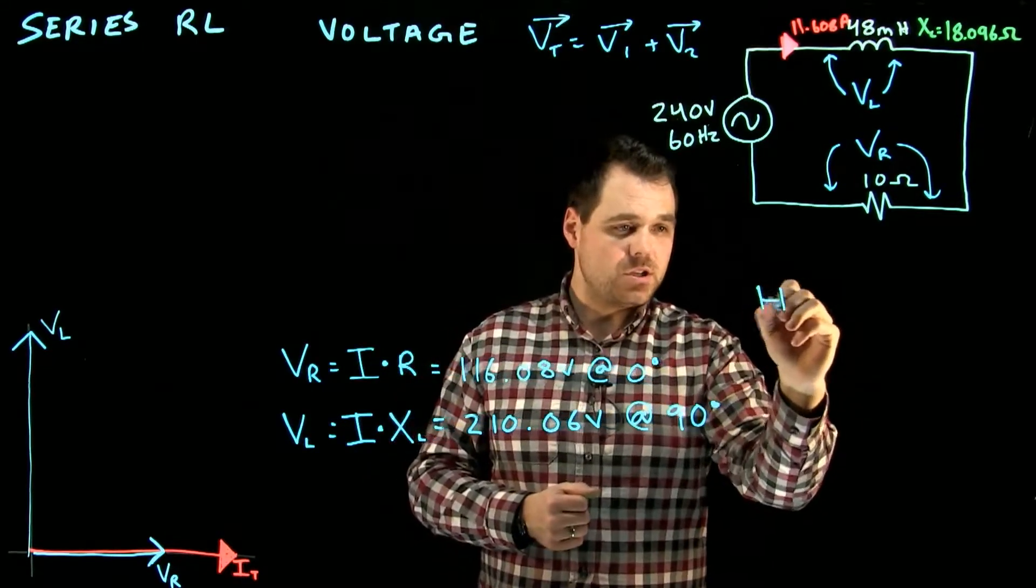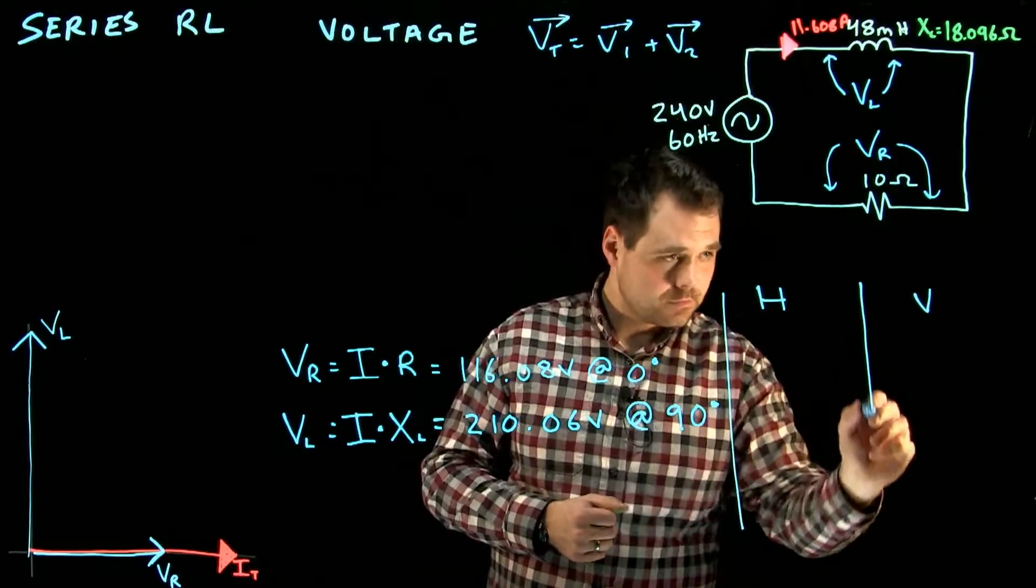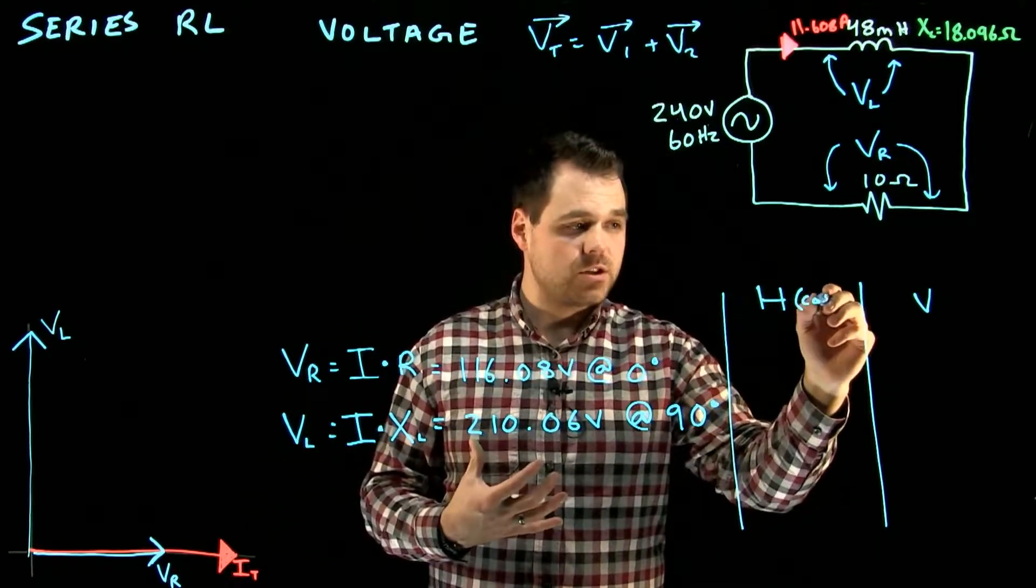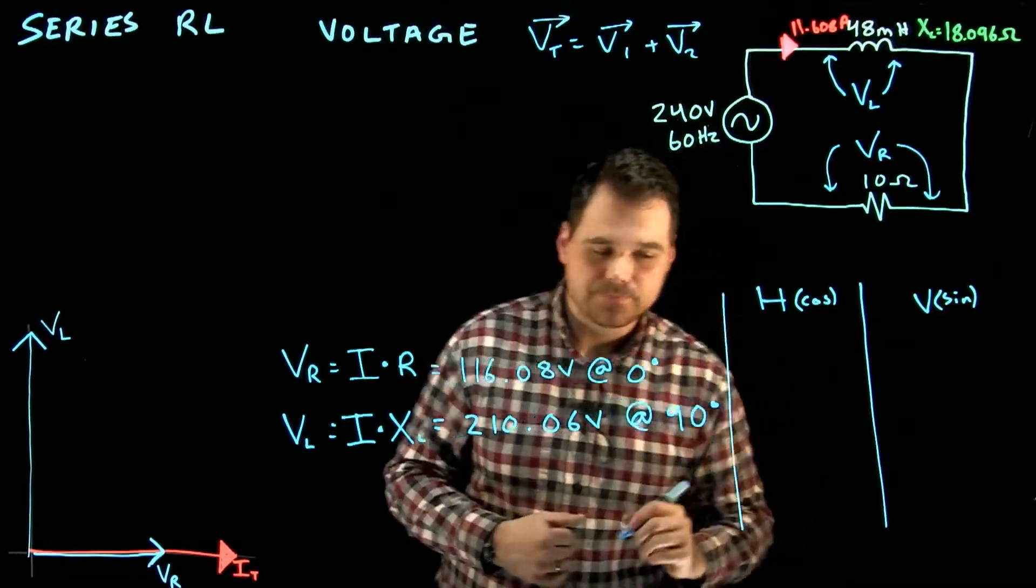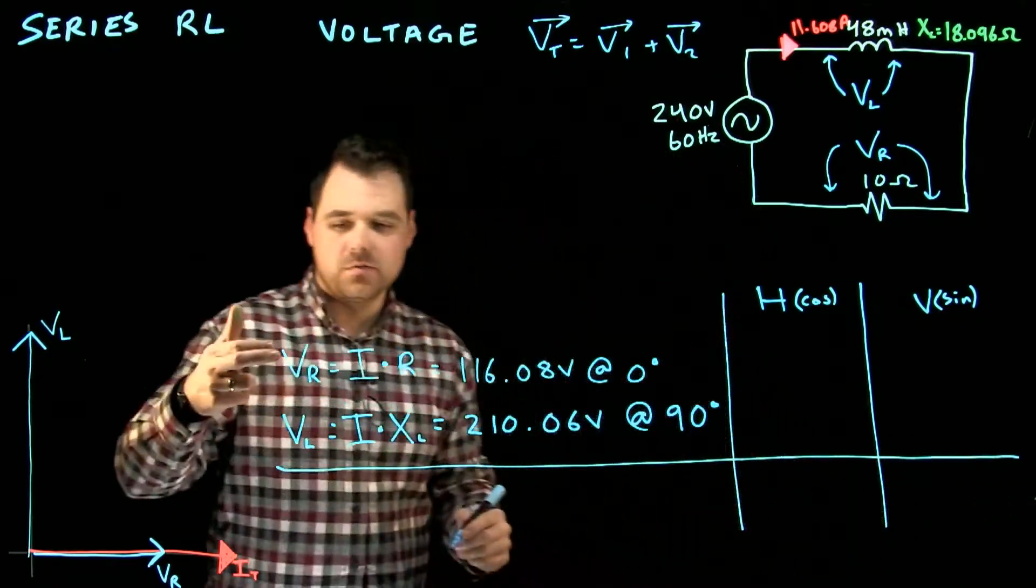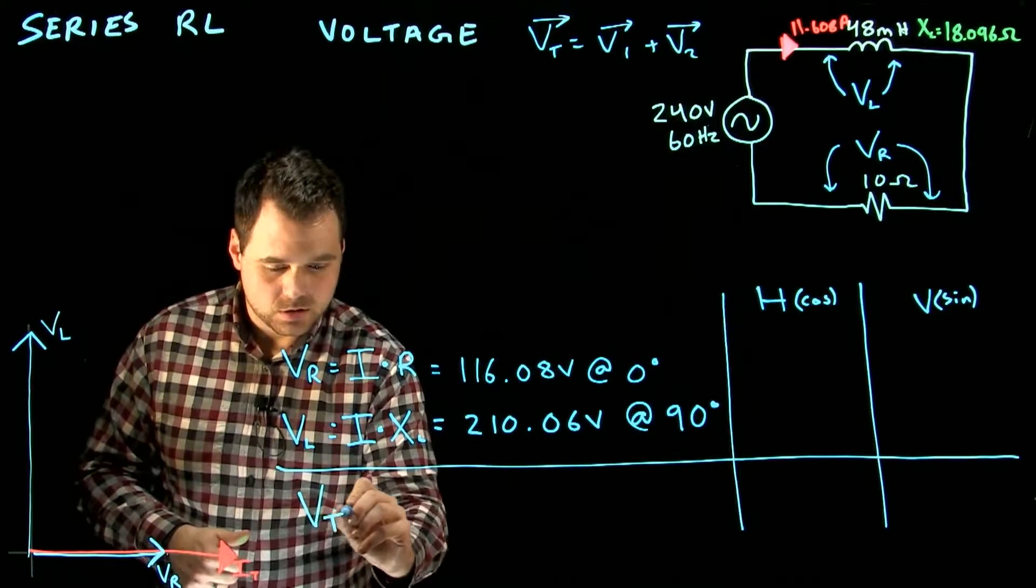So we're going to punch these numbers into an HV chart. An HV chart, our horizontal, we're going to be using the cosine function, just a reminder, and for vertical we're going to be using the sine function. And what we're looking for is we are going to add these guys up. We're going to go VR plus VL should give us VT.